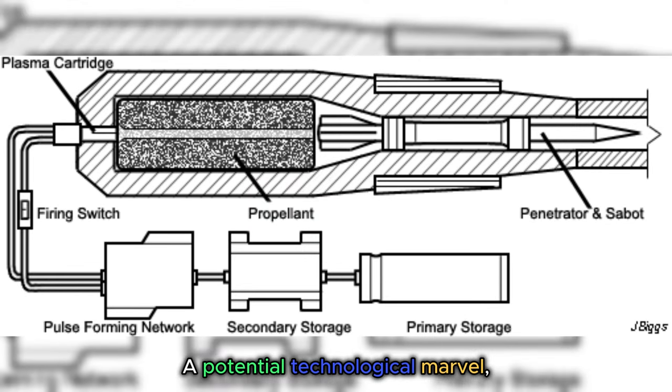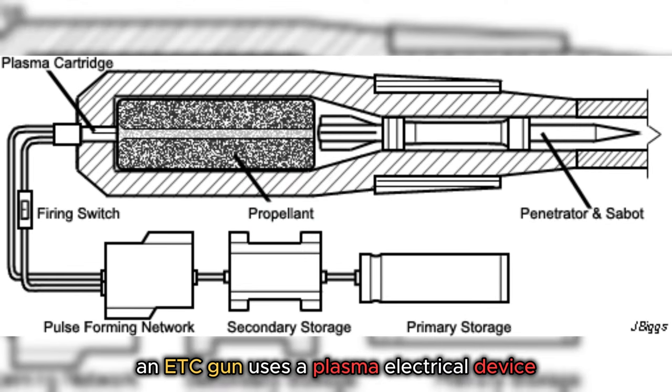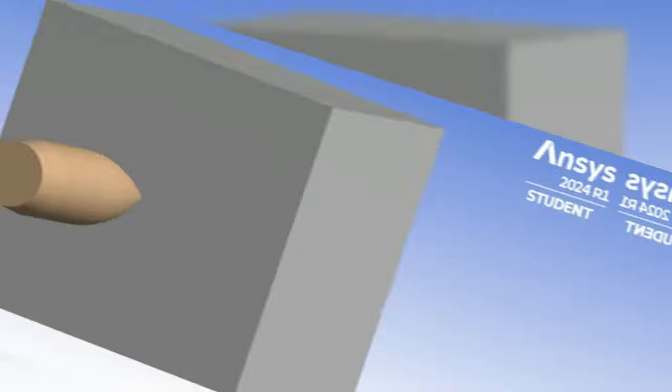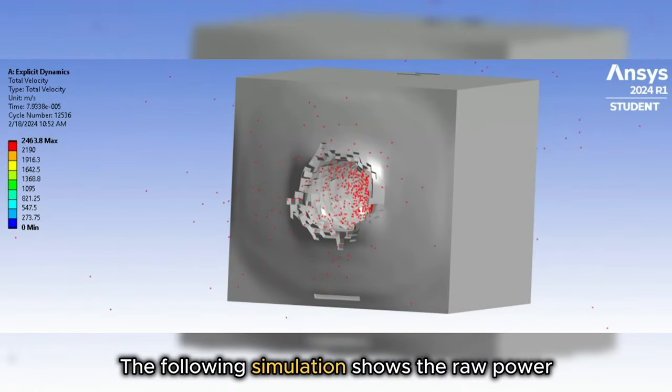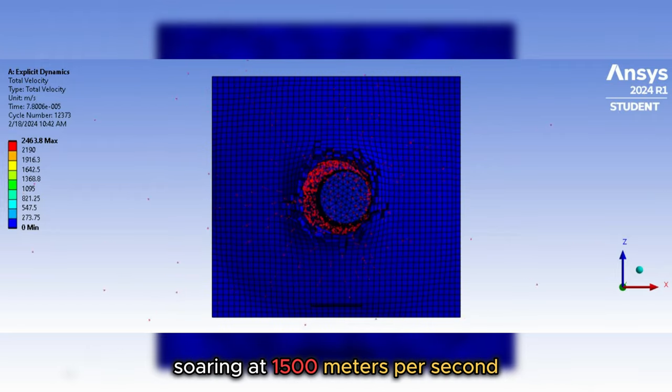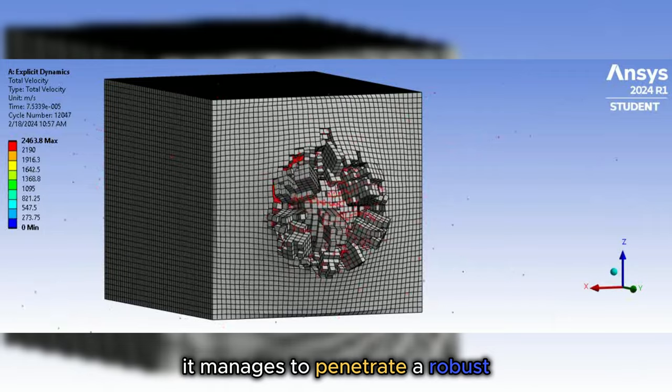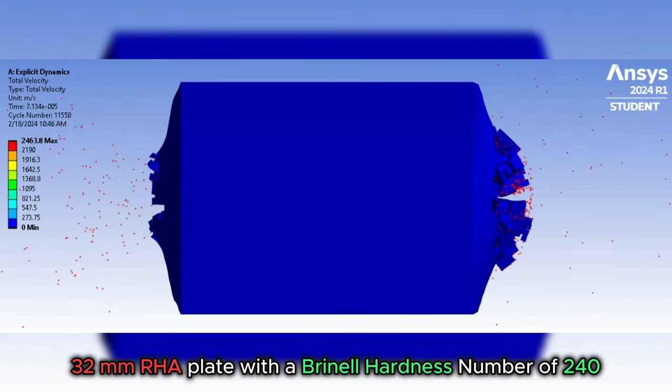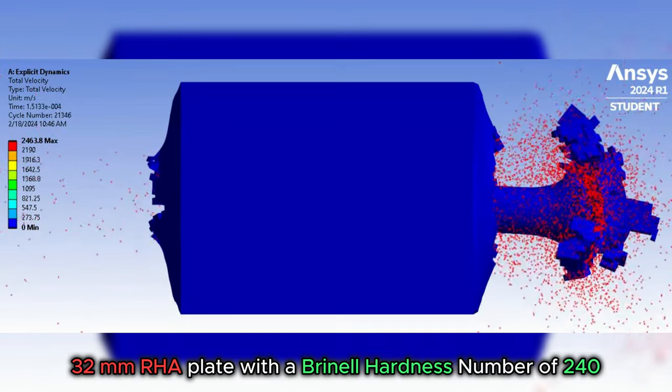A potential technological marvel, an ETC gun uses a plasma electrical device to ignite the propellant, giving it unprecedented velocity. The following simulation shows the raw power of our 6mm ARC projectile soaring at 1500 meters per second. It manages to penetrate a robust 32mm RHA plate with a Brinell hardness number of 240.